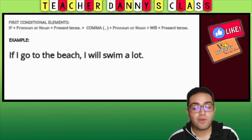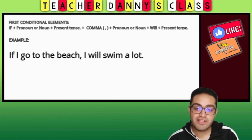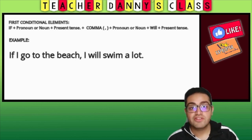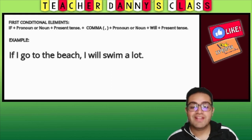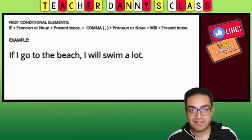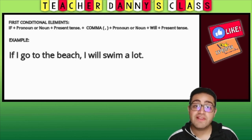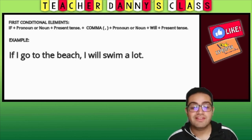For example: 'If I go to the beach, I will swim a lot.' We're using 'if,' the pronoun 'I,' present tense 'go to the beach,' a comma to separate the first sentence, the pronoun 'I' again, the future tense 'will,' and the rest of the sentence using the present tense verb.